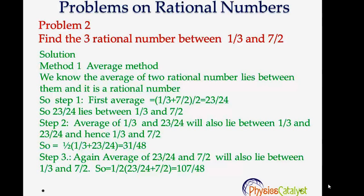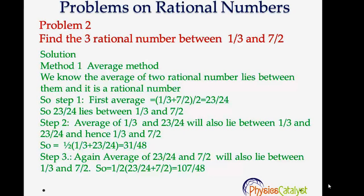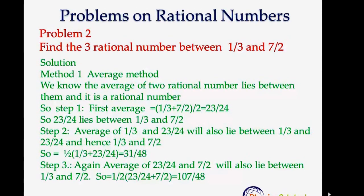Again, the average of 23/24 and 7/2 will also lie between 1/3 and 7/2. So calculating the average, we get 107/48. So here the calculations are a little bit more, it is a little bit tough here. Let's see another method.